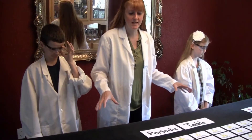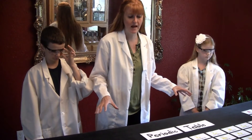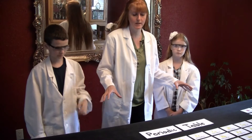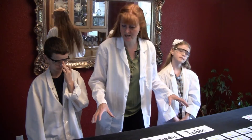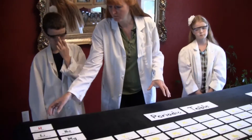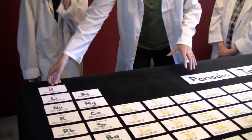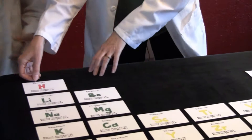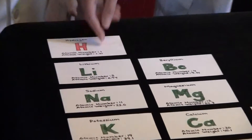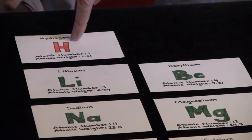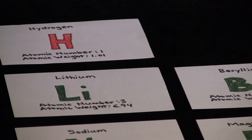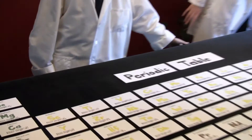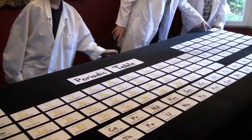One tip for how to do it easily is to look at what the atomic number is. For example, the atomic number for hydrogen is 1, and then the atomic number for helium is number 2 over here.